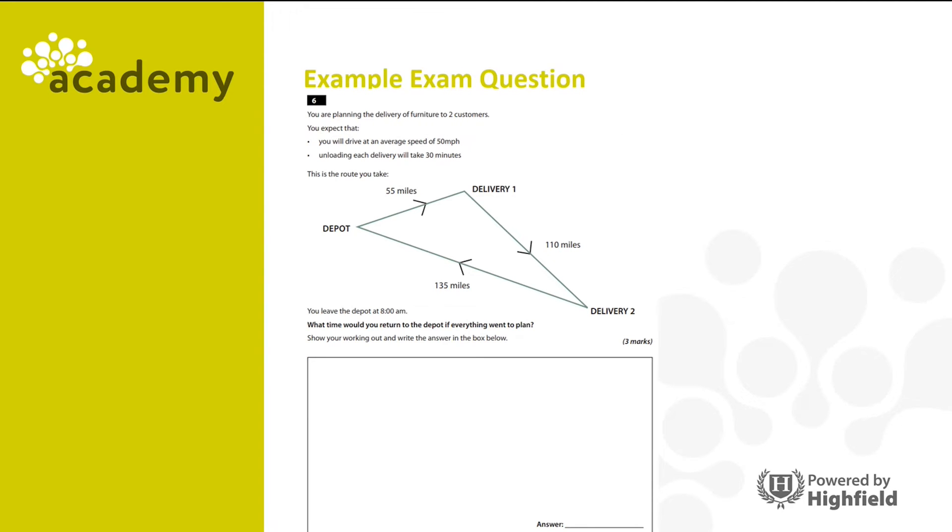Let's look at an example question you would get in an exam. You're planning the delivery of furniture to two customers. You expect that you will drive at an average speed of 50 miles per hour. Unloading each delivery will take 30 minutes, and this is the route that you will take. You leave the depot at 8am. What time would you return to the depot if everything went to plan? Remember, you need to show your working out and write the answer in the box below. So I'd like you to pause the video, have a go at answering the question and press play when you're ready to see the answer.